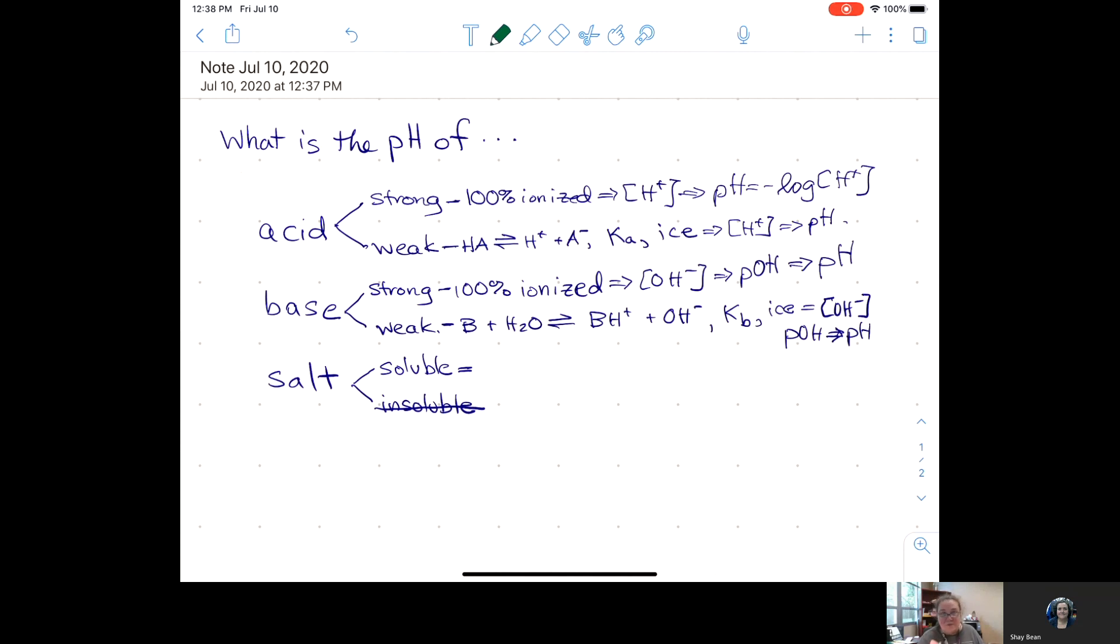All right, in the last video we had this table, this flowchart, and we looked at how do you work a weak acid problem. Just to remind you, once you identify that you have a weak acid, you write an equilibrium reaction, you look up a Ka value, you set up an ICE table, it's going to have Xs, and you will be solving for X, which in the case of a weak acid gives you the pH.